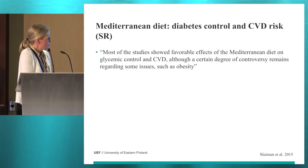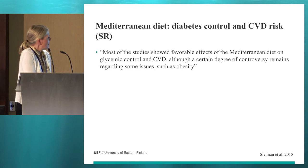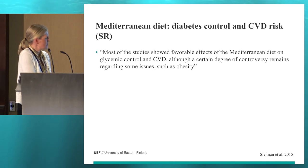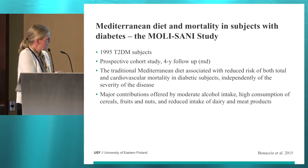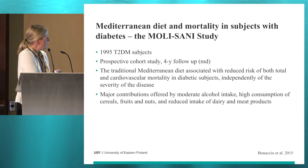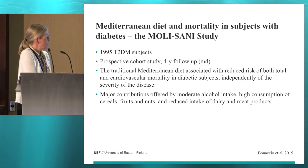Regarding the Mediterranean diet, a very recent systematic review by Sleiman and co-workers stated that most studies showed favorable effects of the Mediterranean diet on glycemic control and cardiovascular diseases, though a certain degree of controversy remains regarding some issues such as obesity. In the Molisani study, the effect of the Mediterranean diet was studied on mortality in subjects with type 2 diabetes — about 2,000 subjects in a prospective cohort study with a median follow-up of 4 years. They found that the traditional Mediterranean diet was associated with reduced risk of both total and cardiovascular mortality in diabetic subjects.